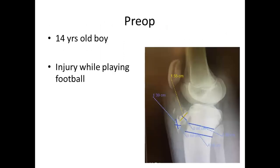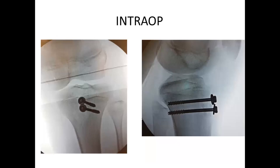The first case was a comminuted tibial tuberosity fracture in a 14-year-old boy injured while playing football, with avulsion from the tibial tuberosity side. Measurements are taken to get the exact screw length so it doesn't jut out posteriorly or impinge on soft tissues. Most of these cases are from Singapore, where a large number of tibial tuberosity fractures of almost all types were seen.